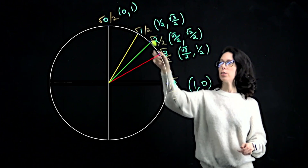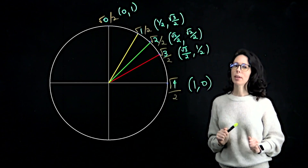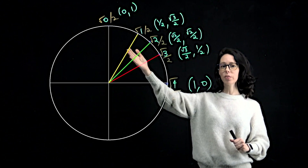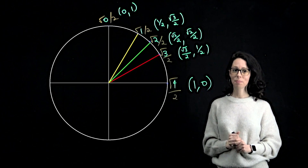So if you can remember 4, 3, 2, 1, 0 — square root divided by 2 — you get your cosine values first, then reverse them for your sine values.